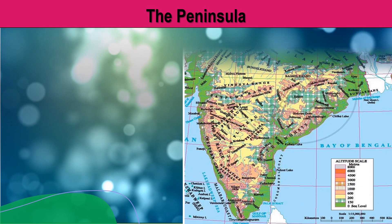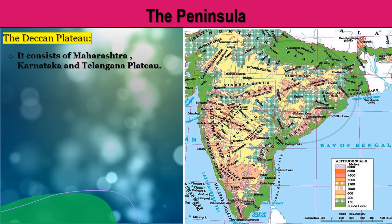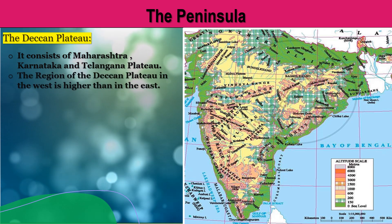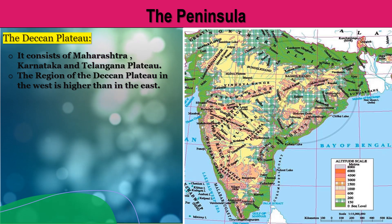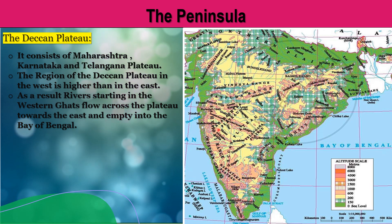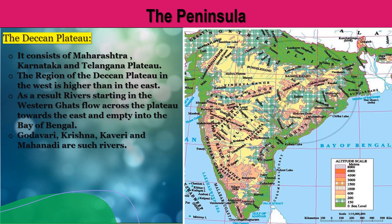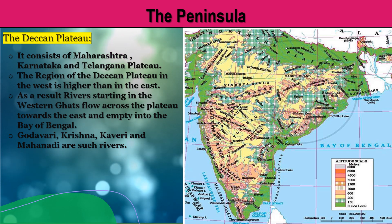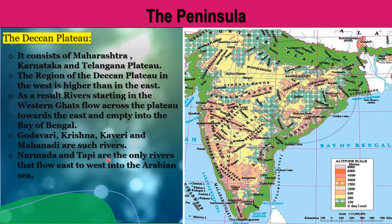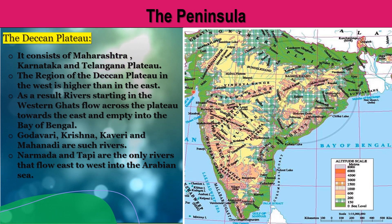The Deccan plateau consists of the Maharashtra plateau, the Karnataka plateau and the Telangana plateau. The region of the Deccan plateau in the west is higher than in the east. As a result, rivers starting in the Western Ghats flow across the plateau towards the east and empty into the Bay of Bengal — Godavari, Krishna, Kaveri and Mahanadi are such rivers. Narmada and Tapi are the only rivers that flow east to west into the Arabian Sea.